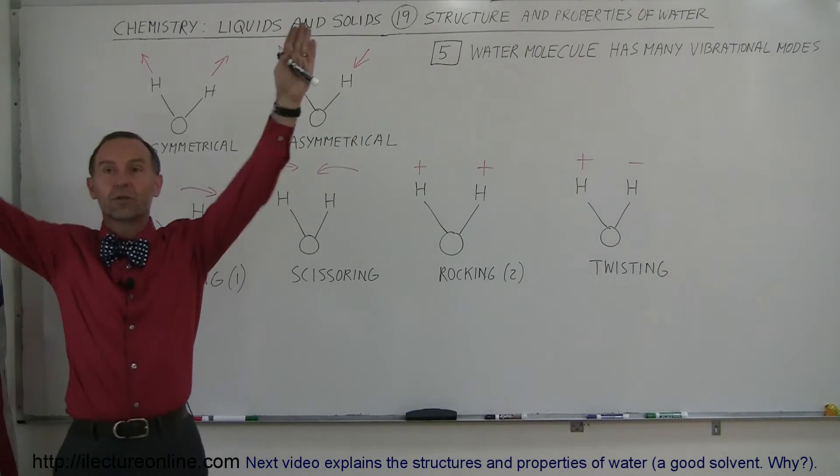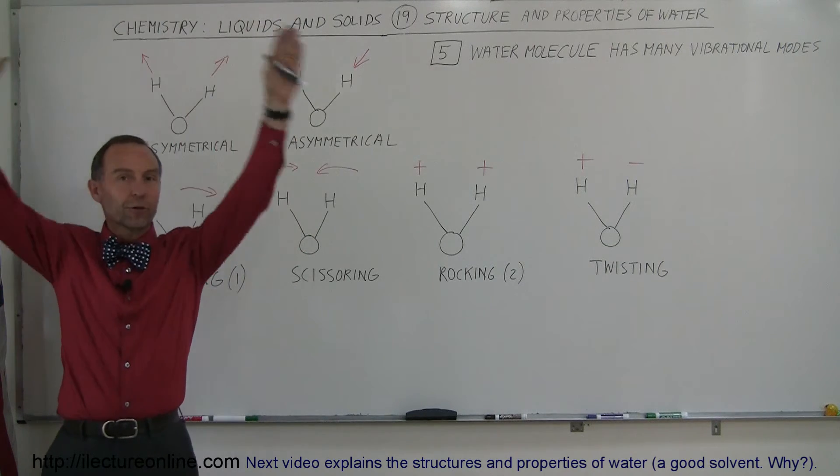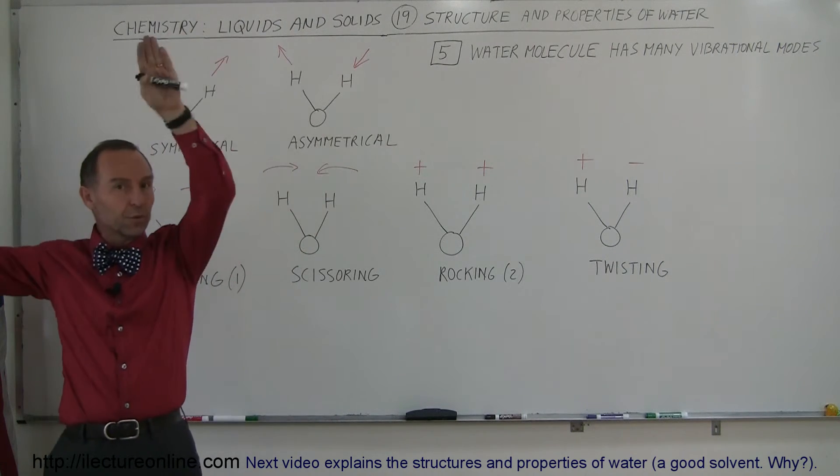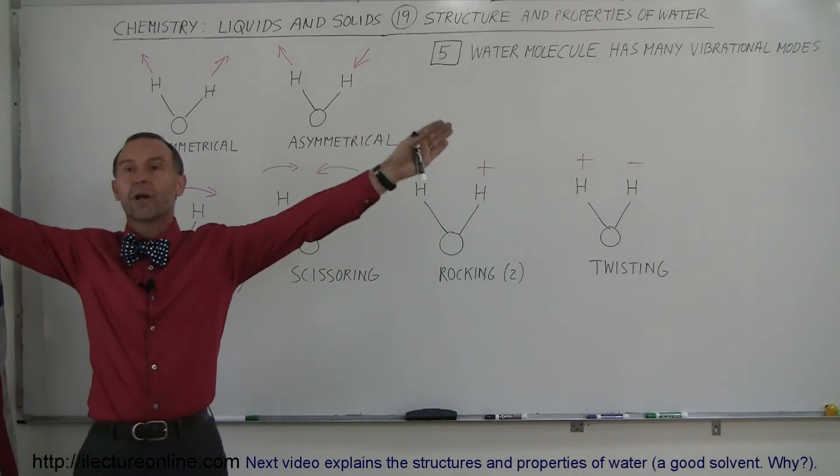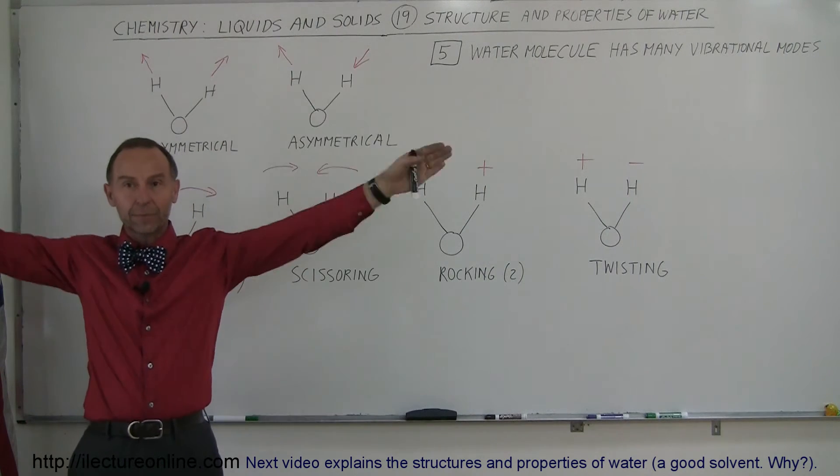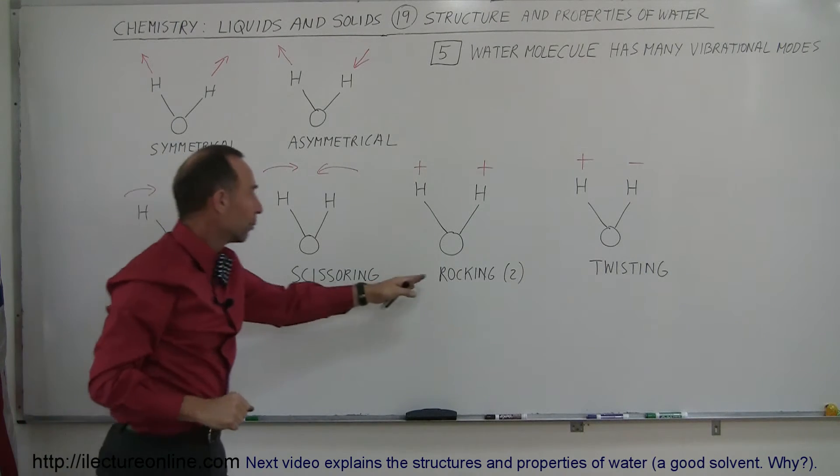The third one is the rocking. So, the hydrogen molecules can rock back and forth like that in symmetry, or they can do scissoring motion. The molecules can come back and forth like that, or they can rock like this.